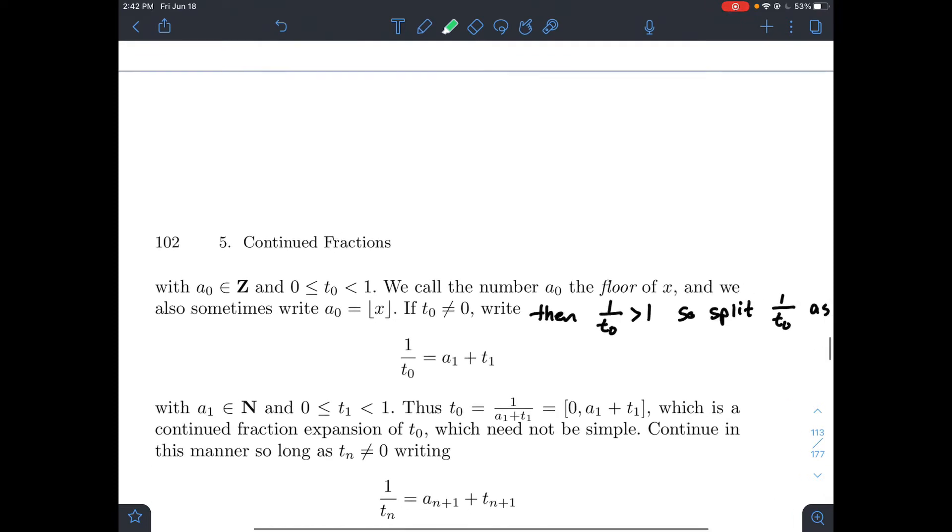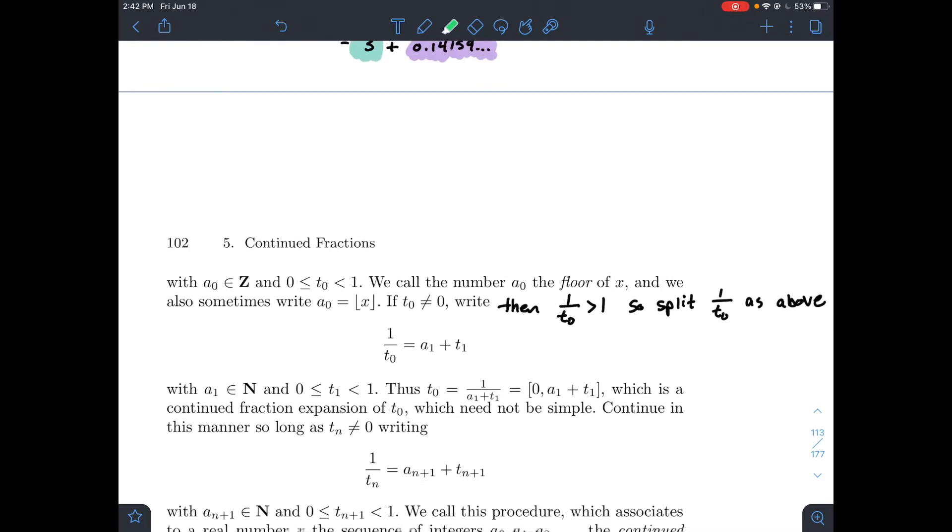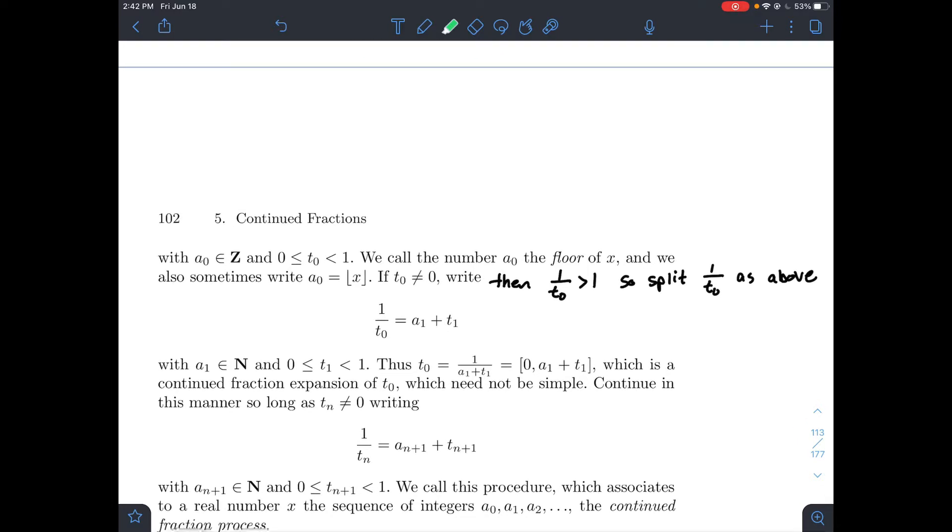What should you notice then? If t0 is a non-zero number, and t0 is between 0 and 1, then its reciprocal should be bigger than 1. So like if you take the reciprocal of a third, you get 3. We're just going to repeat this process then. We're going to split 1 over t0 into its two pieces, a1 plus t1, where a1 is the floor of 1 over t0.